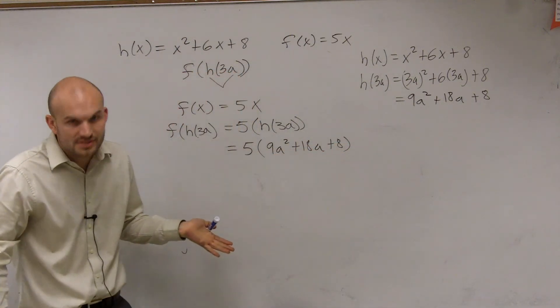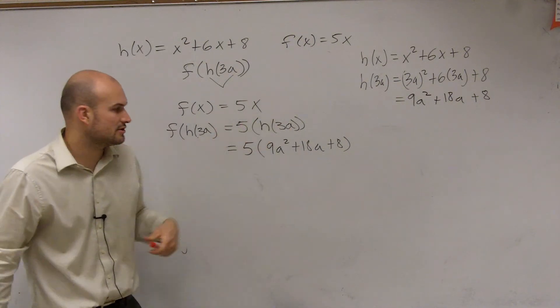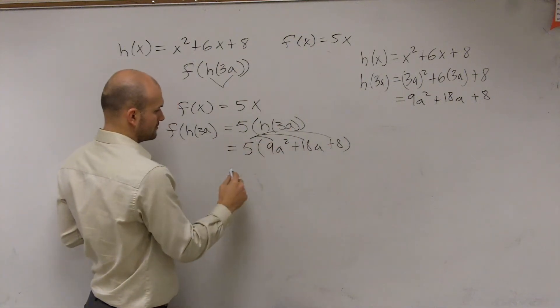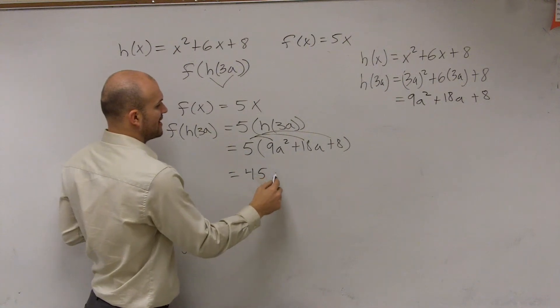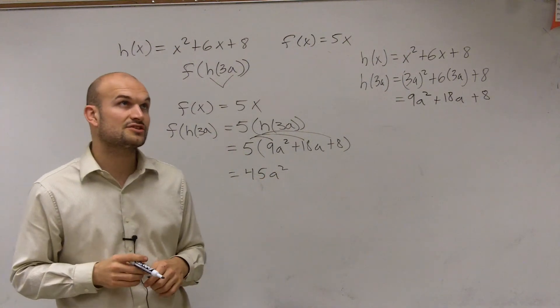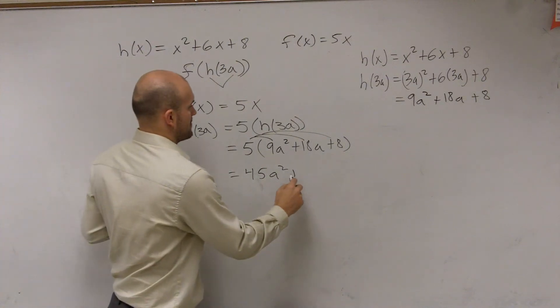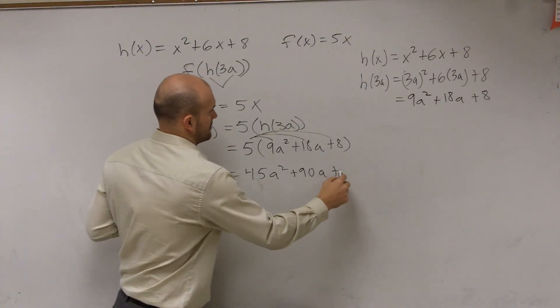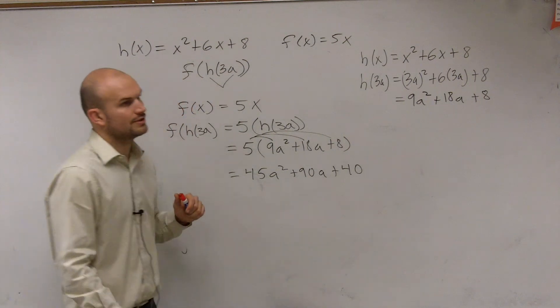Now, is there any other simplifying I can do? Yeah, you can apply distributive property, right? So that equals 45a squared plus 90a plus 40. So there's your final answer.